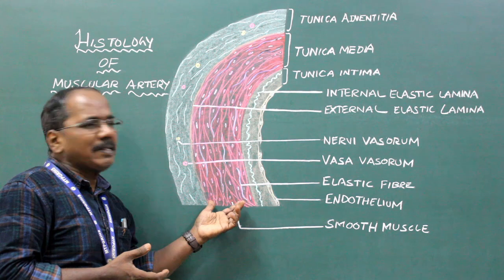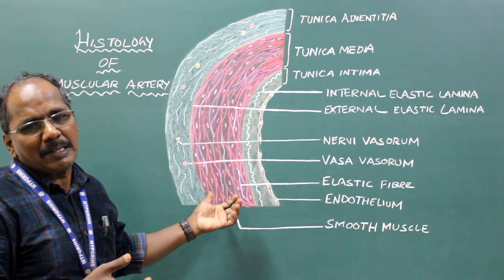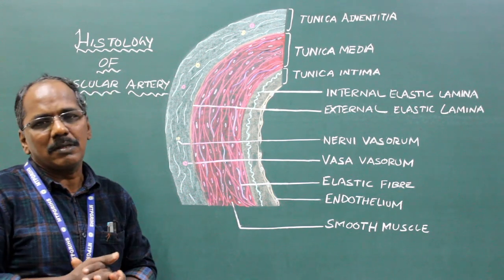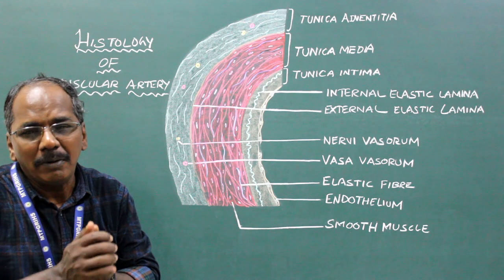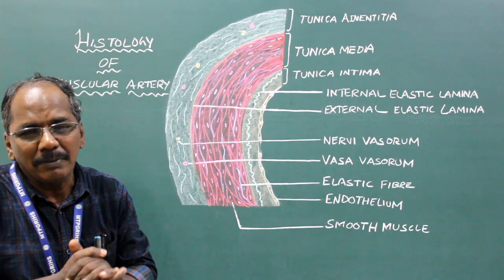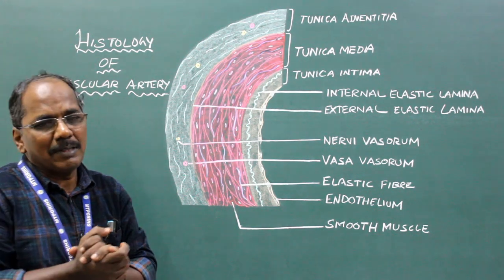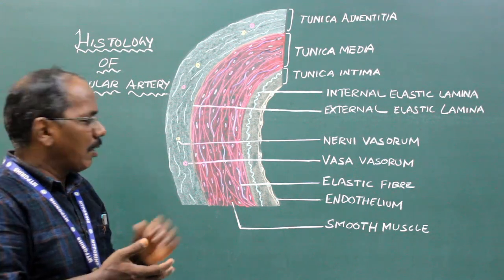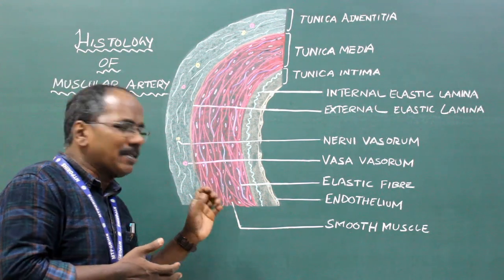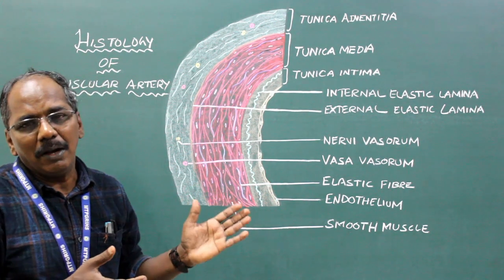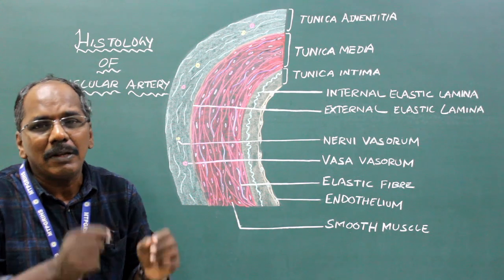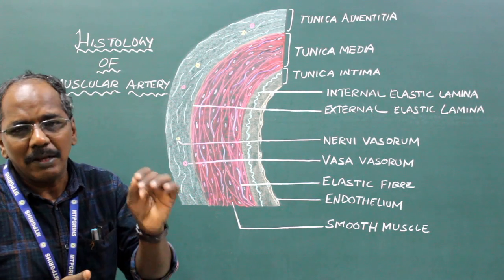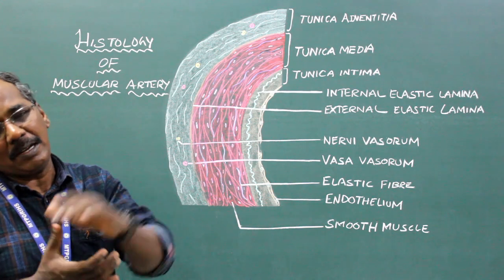In large-sized or elastic artery, the Tunica Media is mainly made up of elastic fibers with muscle fibers, hence the name elastic artery. In medium-sized artery, the Tunica Media mainly contains smooth muscle fibers with less elastic fibers, hence the name muscular artery.